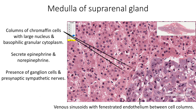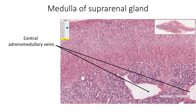The medulla of the suprarenal gland shows chromaffin cells arranged as columns. These chromaffin cells are the postganglionic sympathetic neurons with no axons. They are large cells with a large nucleus and basophilic granular cytoplasm. Most chromaffin cells secrete epinephrine; a few secrete norepinephrine. In addition to chromaffin cells, we also find a few ganglion cells as well as preganglionic sympathetic nerves. Between the cell columns, we find venous sinusoids with fenestrated endothelia. The medulla also shows sections of central adenomedullary veins.